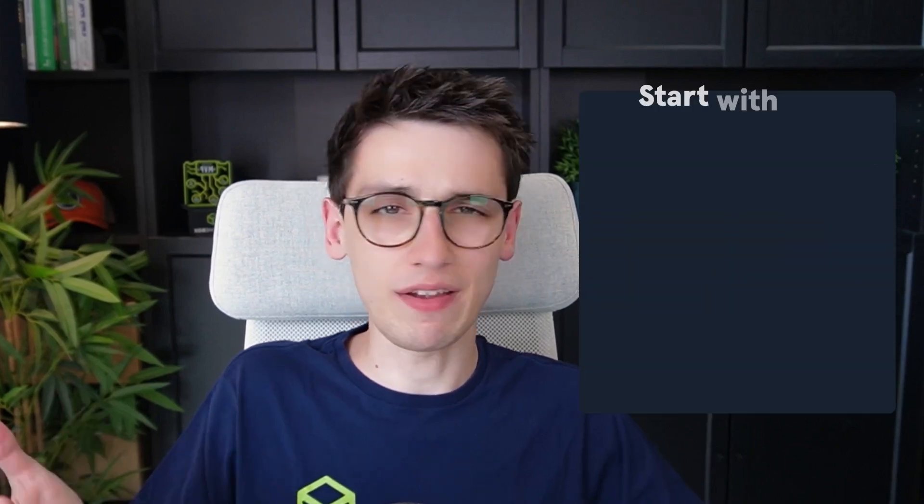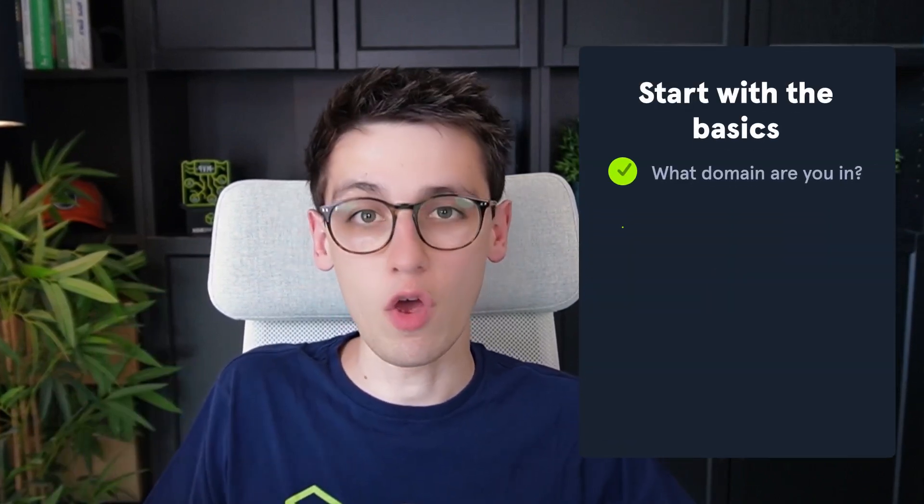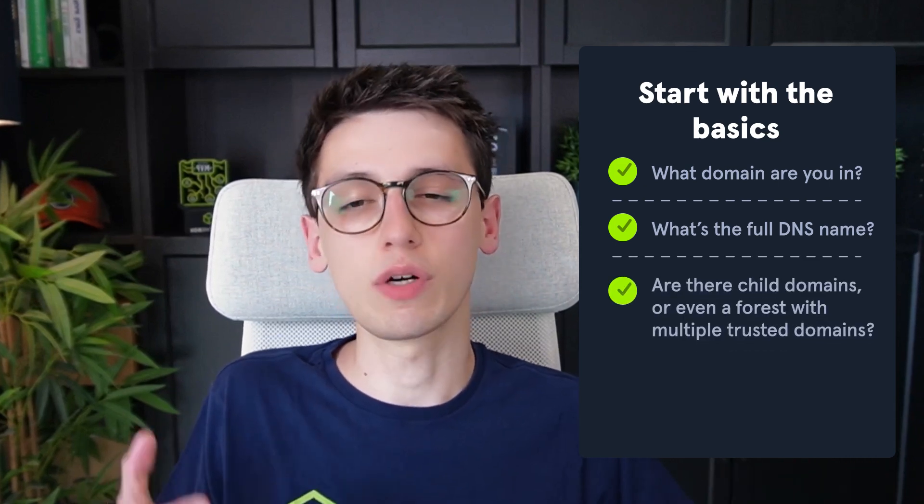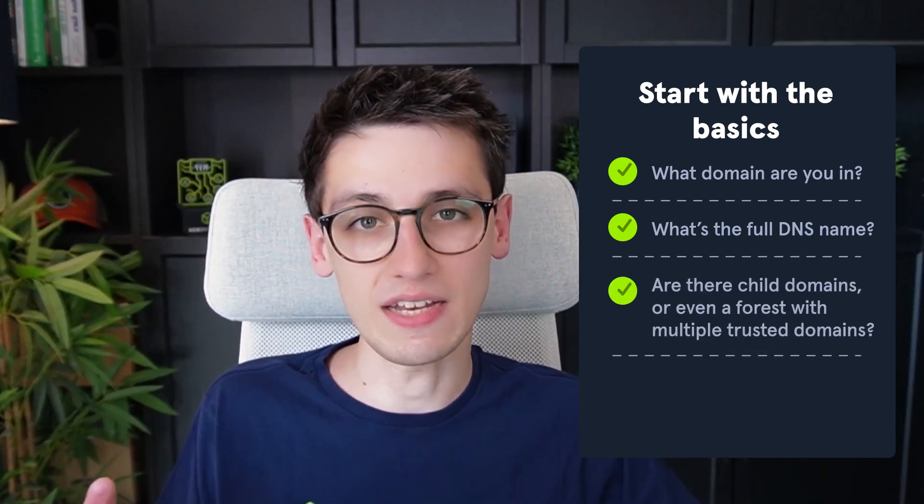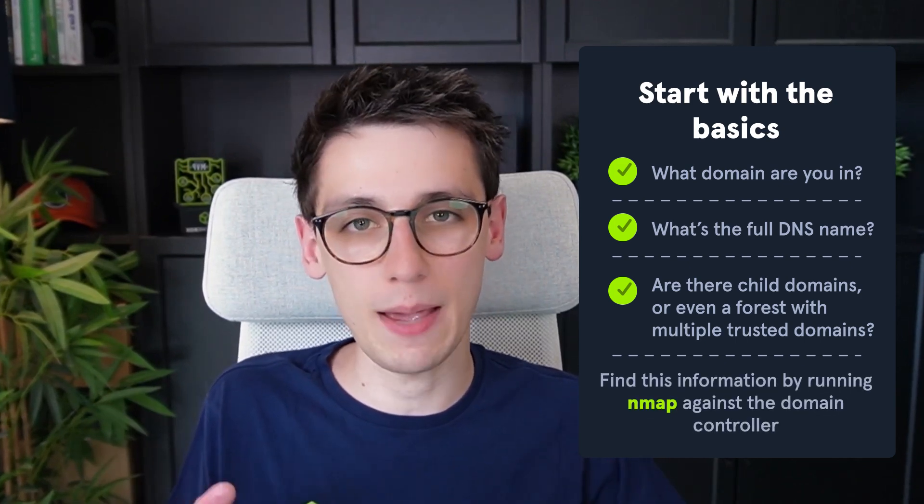Step 3 is to enumerate Active Directory. If you're on a Windows-based internal network, the chances are you're dealing with Active Directory, and if you don't understand the structure of that domain, you're operating blind. Start by figuring out the basics: what domain are you in, what is the full DNS name, are there child domains or even a forest with multiple trusted domains? You can usually find this by running nmap against the domain controller. With just low-privileged AD credentials you can enumerate all users, groups, computers, service accounts, domain trusts, group memberships and access control lists.